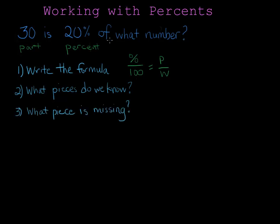What piece is missing? Well, of what number? 'Of' is generally a clue that we're looking at the whole. And that makes sense. If we were given the part and the percent, then we should be looking for the whole.